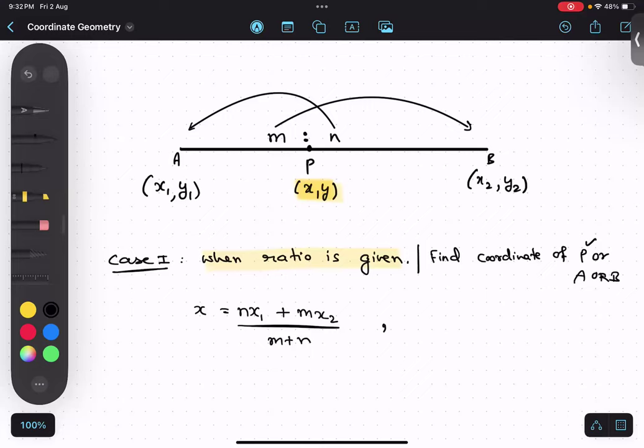Similarly, can you try to find out the value of y? Same thing will happen. This n will go and meet y1, m will go and meet y2. Very simple. So you don't have to remember this formula as such. So what will be the formula? ny1 plus my2 upon m plus n.